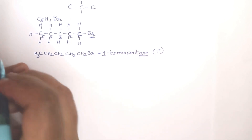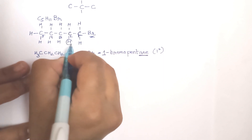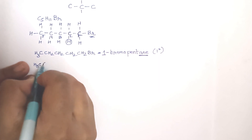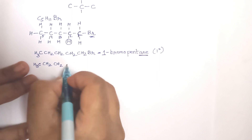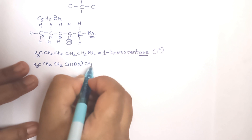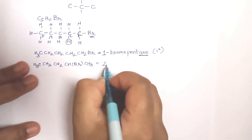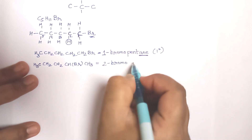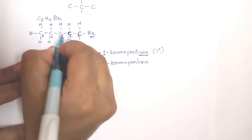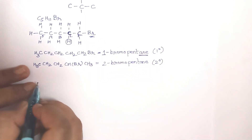For the second structure, instead of bromine at carbon 1, we replace a hydrogen on carbon 2 with bromine: CH3-CH2-CH2-CHBr-CH3. The position of bromine is at the second carbon, so the name is 2-bromopentane. This carbon is attached to two other carbon atoms, so it is a secondary compound.